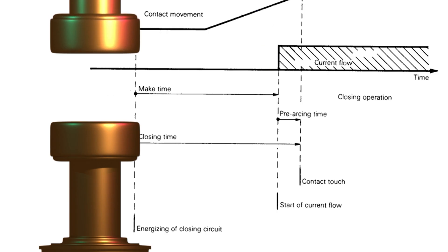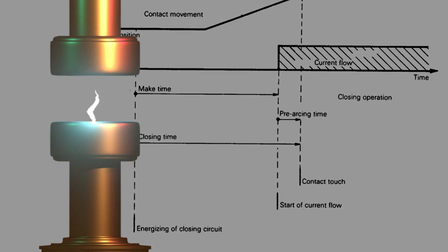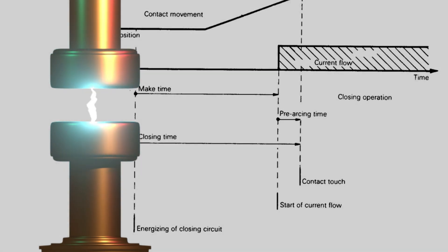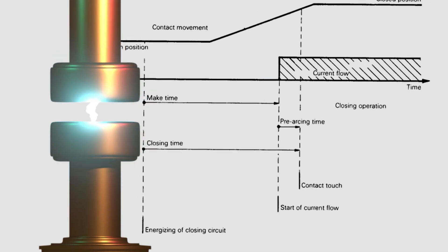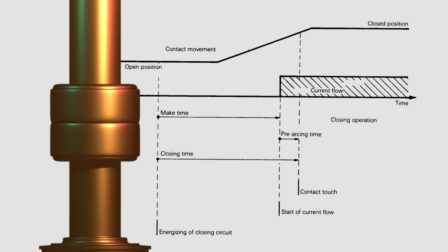As the moving contact approaches the fixed contact, but just before touching, an arc initiates due to the high voltage gradient across the very small gap between the contacts. This high electric field causes the dielectric medium between the contacts to break down, resulting in arc initiation. As the arc is initiated, current starts to flow through the breaker, even though the contacts have not yet physically touched. Shortly after that, the contacts physically touch and the current continues to flow normally. The time from when the closing circuit is energized to the arc initiation is called the making time.